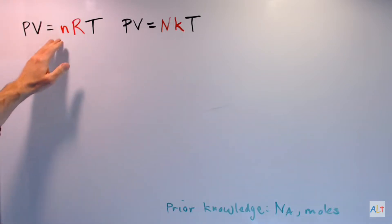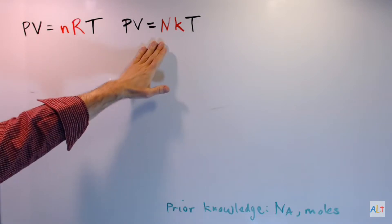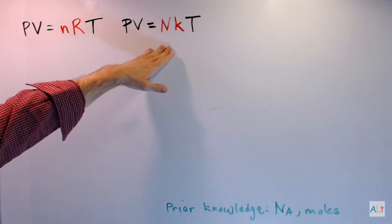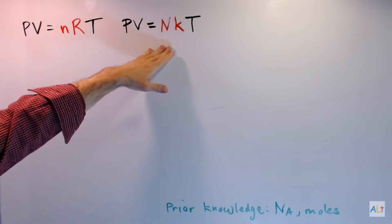So here we have two different versions of the ideal gas law. Life would be so much simpler if there were only one version. This is what you see in chemistry class most of the time. This is the version you'll see in a physics class or a physical chemistry class usually.